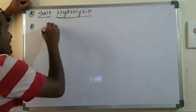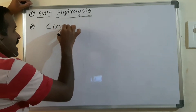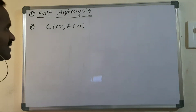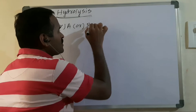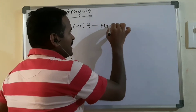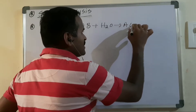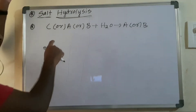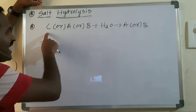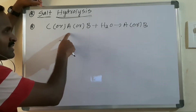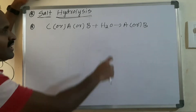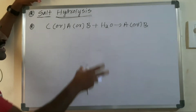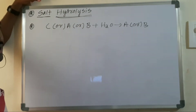Whenever the cation of a salt, or the anion of a salt, or both ions of the salt react with water, and it forms either an acidic solution or a basic solution, that process is called salt hydrolysis.